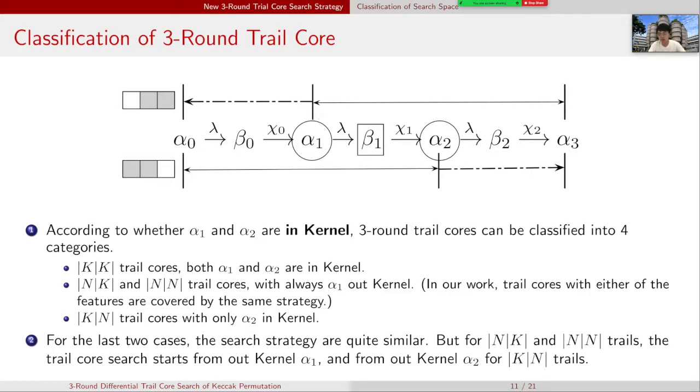K|N trail cores with only α2 out of kernel. For the last two cases, the search strategies are quite similar. But for N|K and N|N trails, the trail core search starts from out kernel state α1. But for K|N trails, it starts from out kernel state α2.